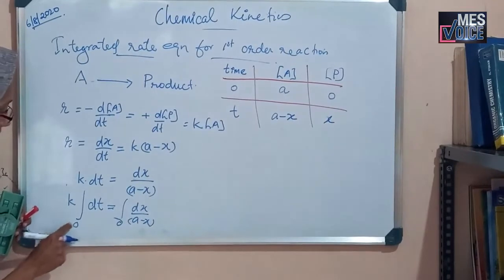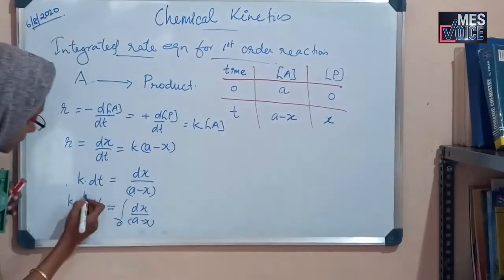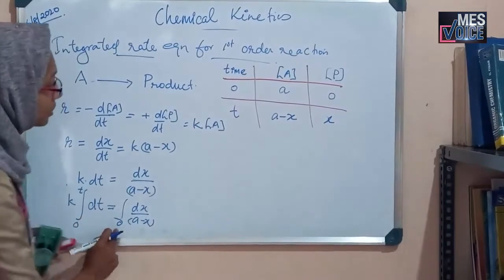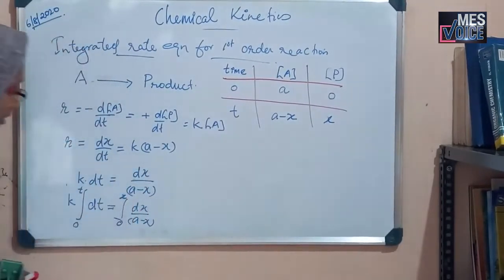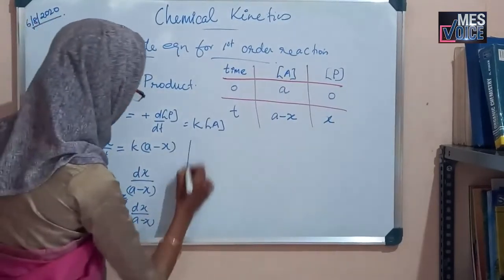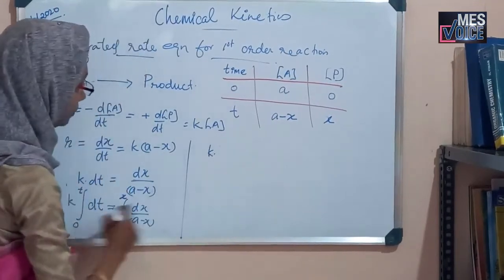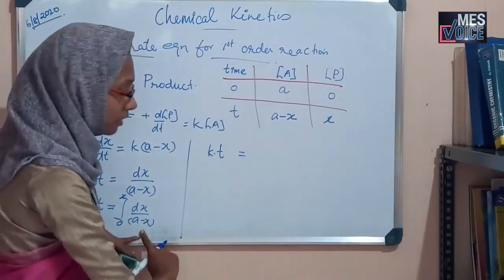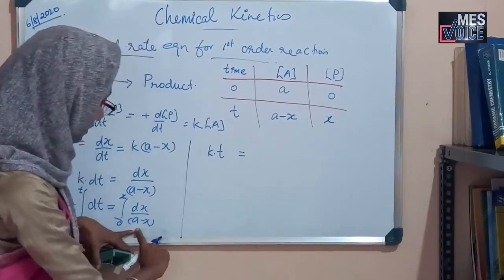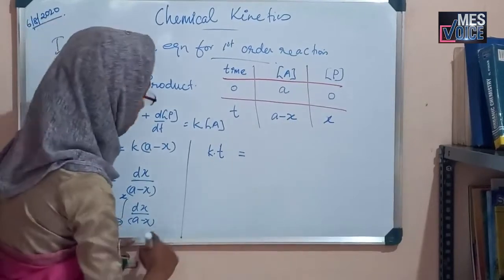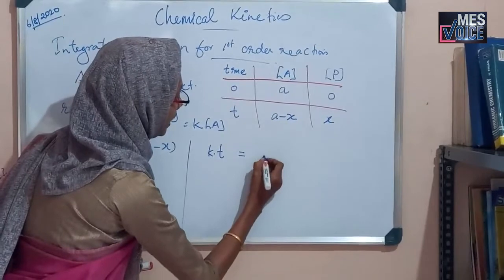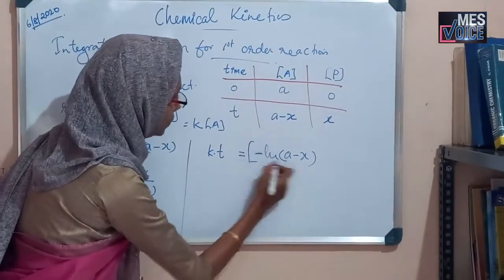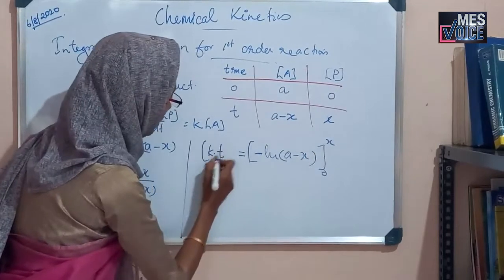The limit is: when T is equal to 0, the concentration of X is equal to 0. This is the lower limit. And the upper limit is when T is equal to T, the concentration of product is equal to X. Then, integrating: the integral of dT is T, and the integral of 1 by (A minus X) is ln(A minus X), between the limits 0 to T and 0 to X.